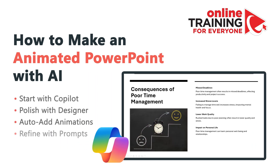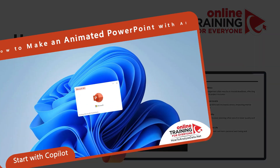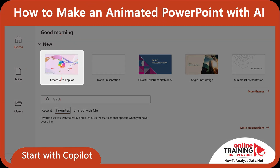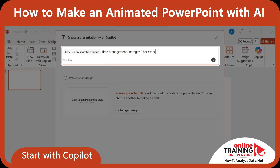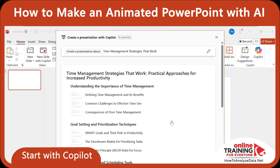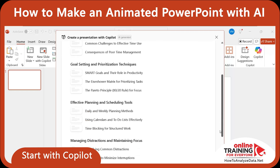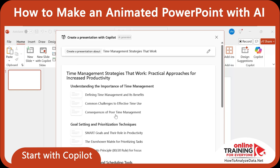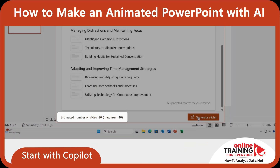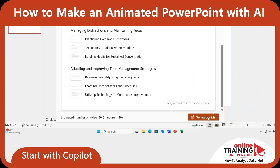Let me show you how you can build a cool presentation with Microsoft Copilot AI for the topic 'Time Management Strategies that work.' To start, let's open PowerPoint and activate Copilot. In the home screen, I clicked 'Create with Copilot.' In the section 'Create a presentation about,' I typed the topic 'Time Management Strategies that work.' In seconds, Copilot generated an outline for the presentation, which was amazingly good. You can see that all key topics have been covered here. It also estimated the number of slides would be between 20 and 40.